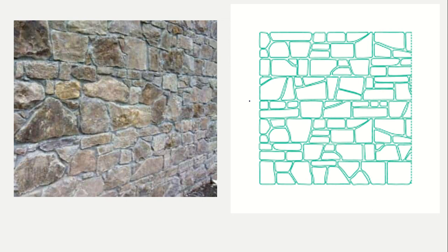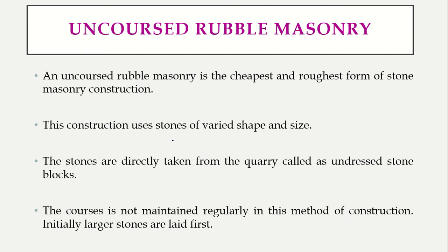Looking at the figure, if you consider one course, the stones arranged together are of around the same height to form that course. The next course of the wall may be of a different height — courses are not necessarily the same height as each other, but stones within the same course are of equal height.